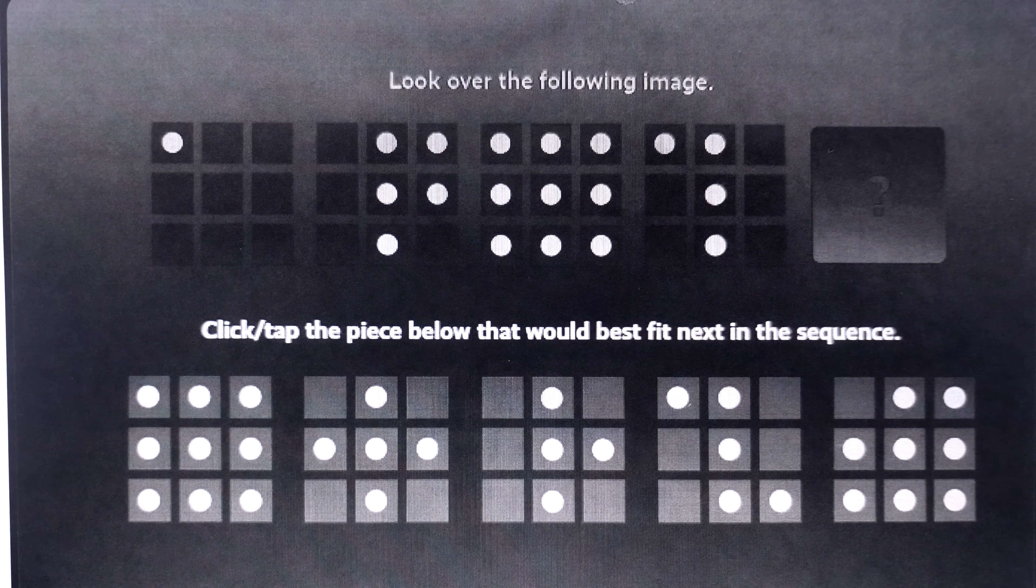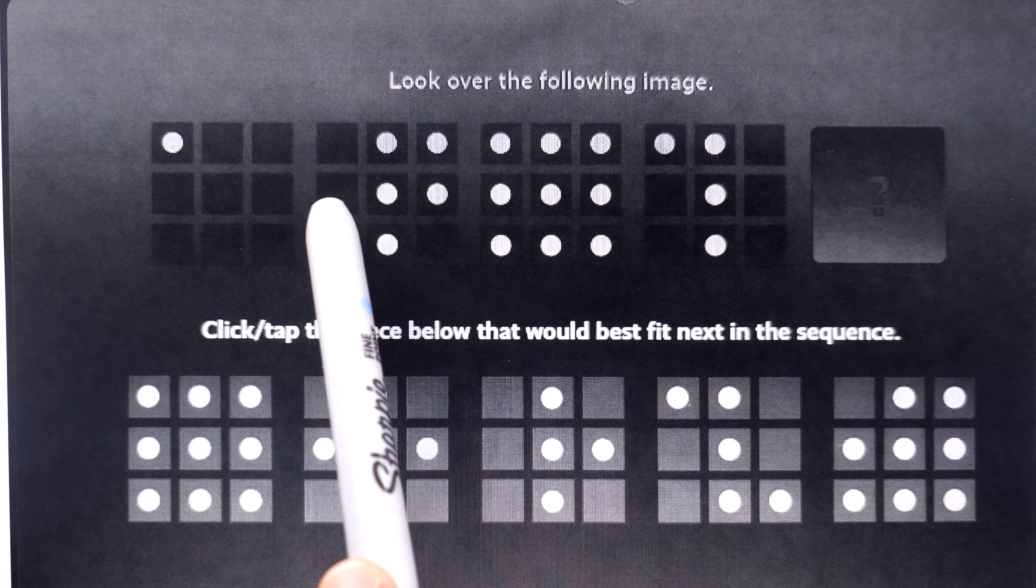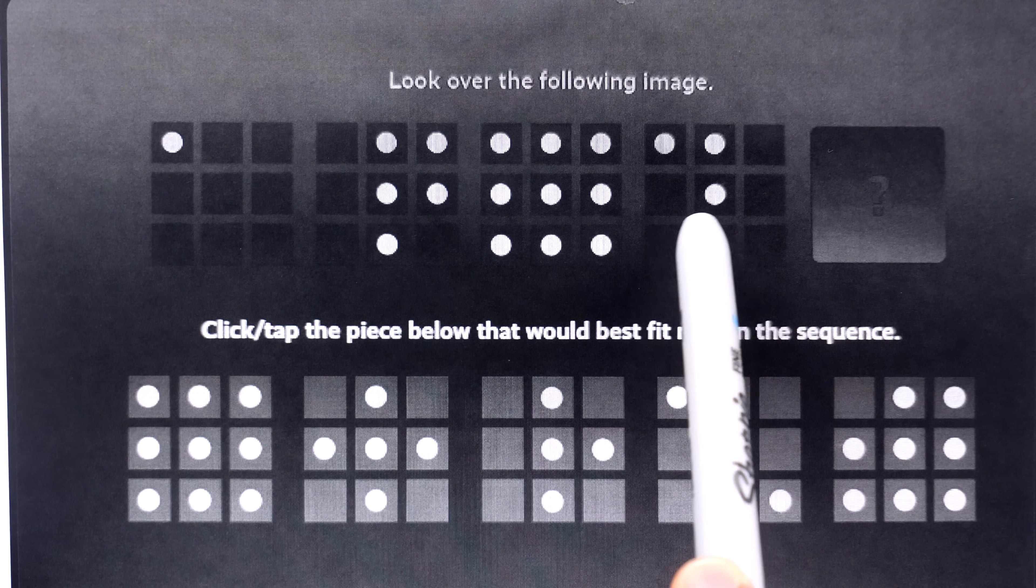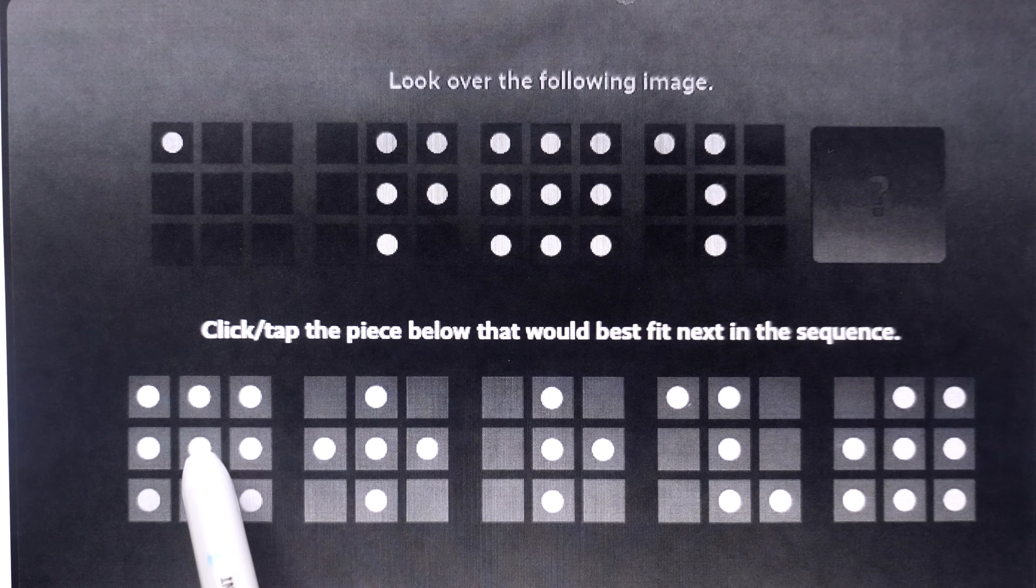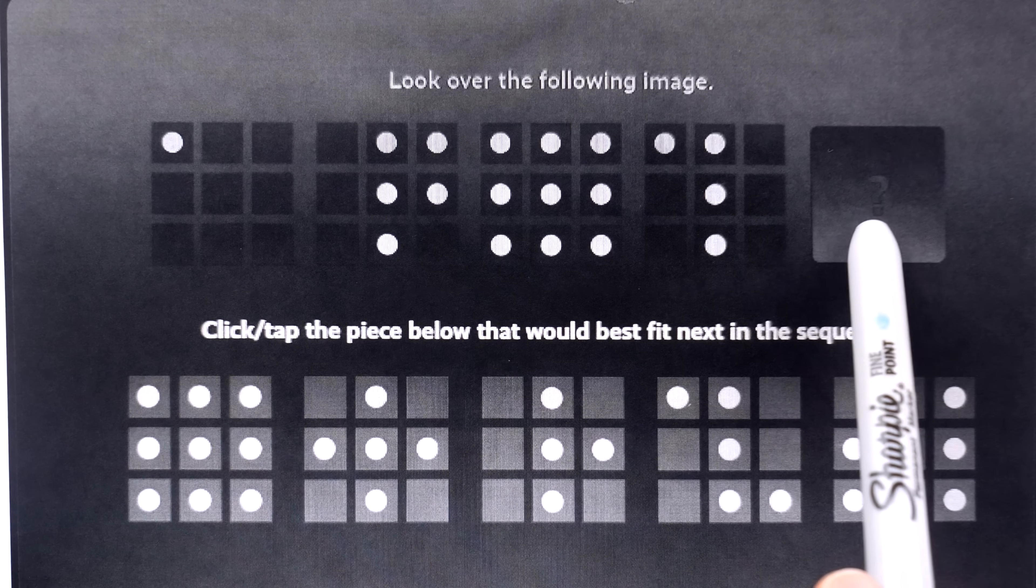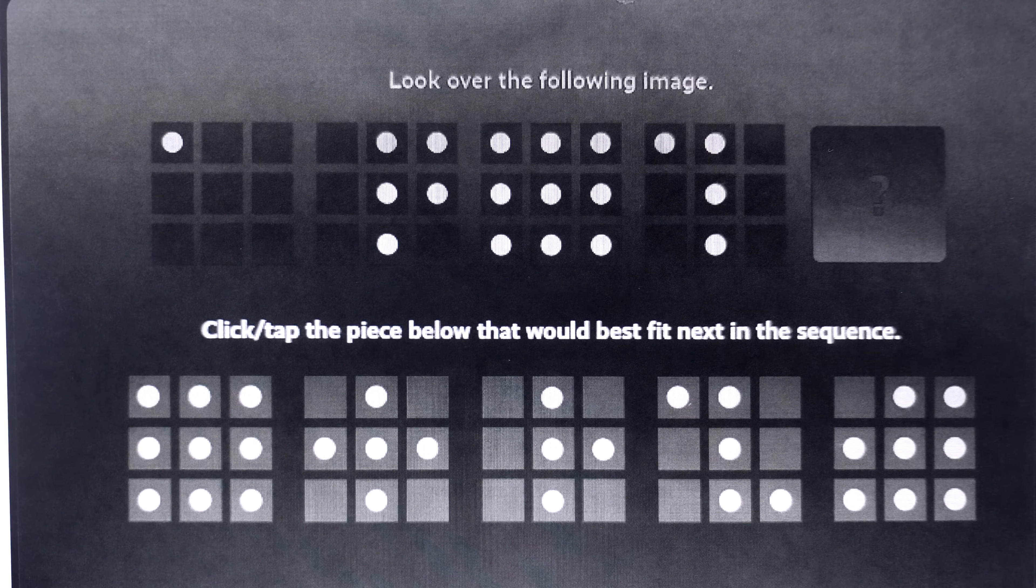You're asked to look over the following image, which is a sequence of three by three grids with dots in them. You're then asked to click the piece below that would best fit next in the sequence. What do you say?